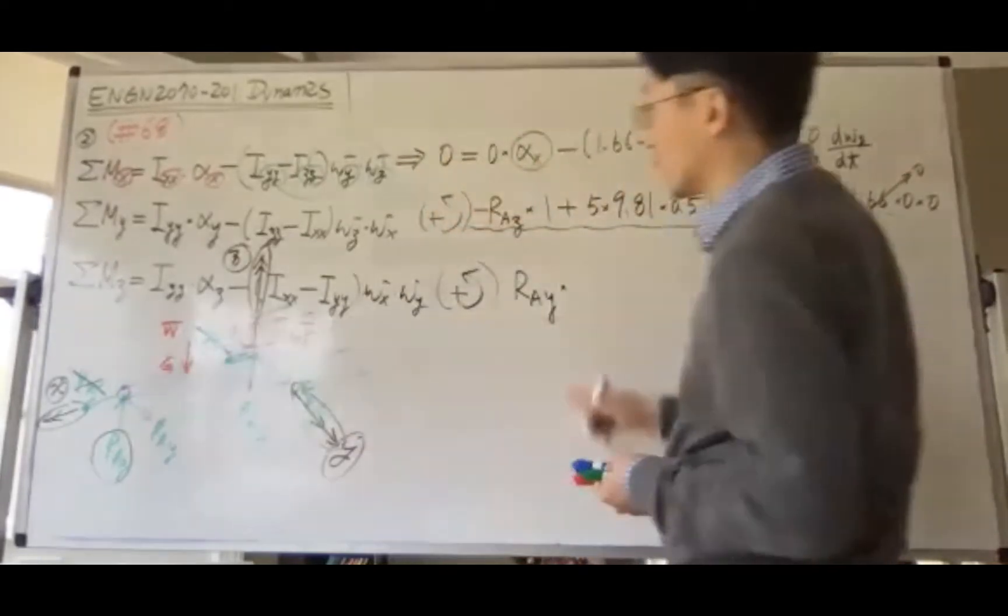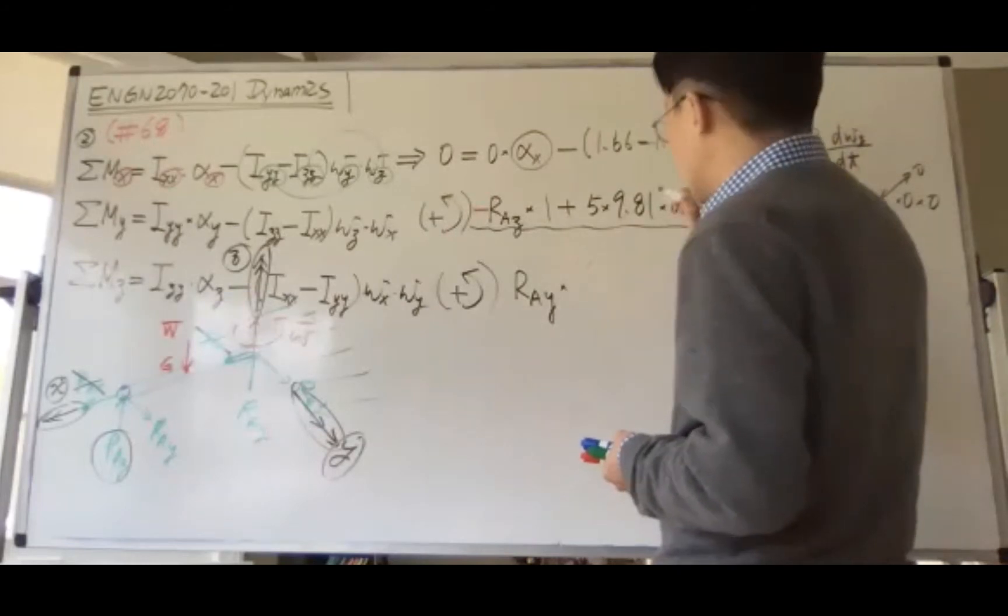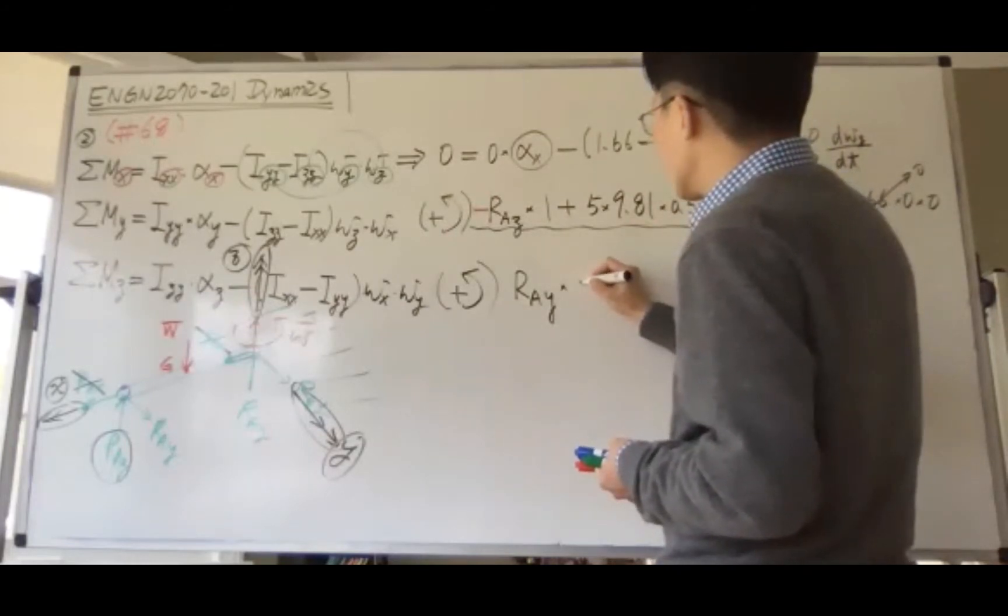Because we're taking the moment with respect to the point, it's R_ay times one meter.